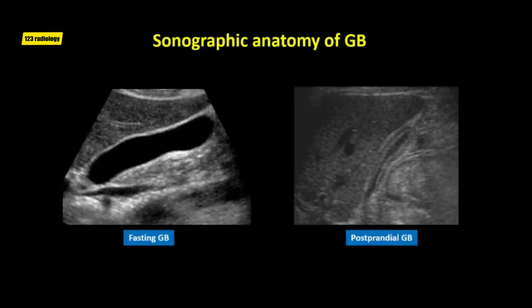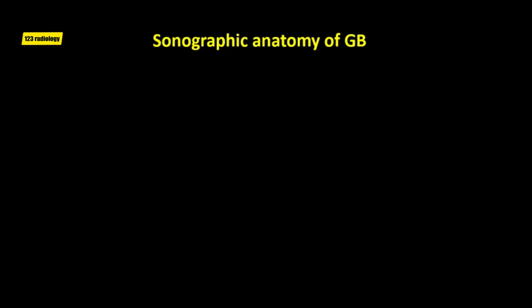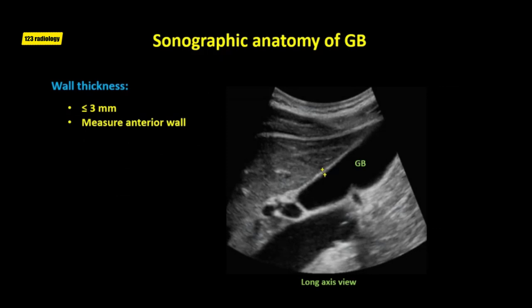Fasting of a minimum of six hours is required before evaluating the gallbladder, because a contracted gallbladder appears to have a thickened wall and can obscure intraluminal or wall abnormalities. The normal gallbladder wall is thin, smooth, and mildly echogenic, measuring one to three millimeters in thickness. When measuring the gallbladder wall, we look at the anterior wall in long-axis view with the ultrasound beam perpendicular to the wall. The normal gallbladder wall thickness should be equal to or less than three millimeters.